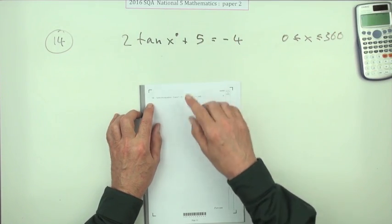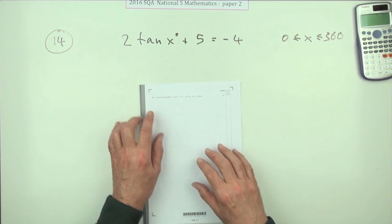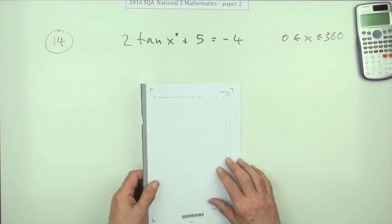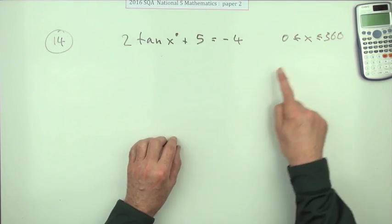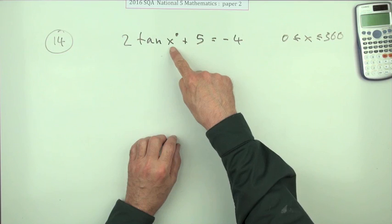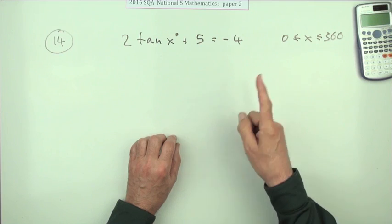Number 14 from paper 2 of the 2016 National 5 exam. Solve this trig equation for three marks. Notice this business about the x's and the degrees - x itself is just a number, that's why the number's got the wee degree sign on it.